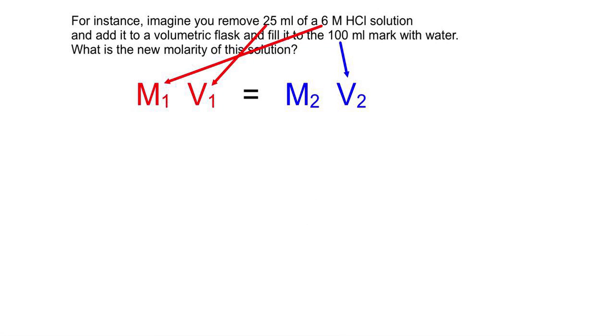This problem asks us to figure out what the new molarity of a diluted solution is if we start with 25 milliliters of a 6 molar solution and we increase the volume from 25 up to 100 by adding water, or actually adding the acid to the water.